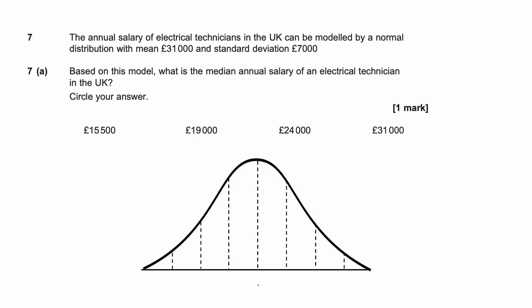This is question 7 from the 2019 AQA Core Maths Paper 2A, all about the normal distribution. We're told the mean is 31,000 and the standard deviation is 7,000. The first part asks for the mean annual salary of an electrical technician in the UK. It's only worth one mark, and as we know, the mean and the median are the same for a normal distribution, so the answer is 31,000.